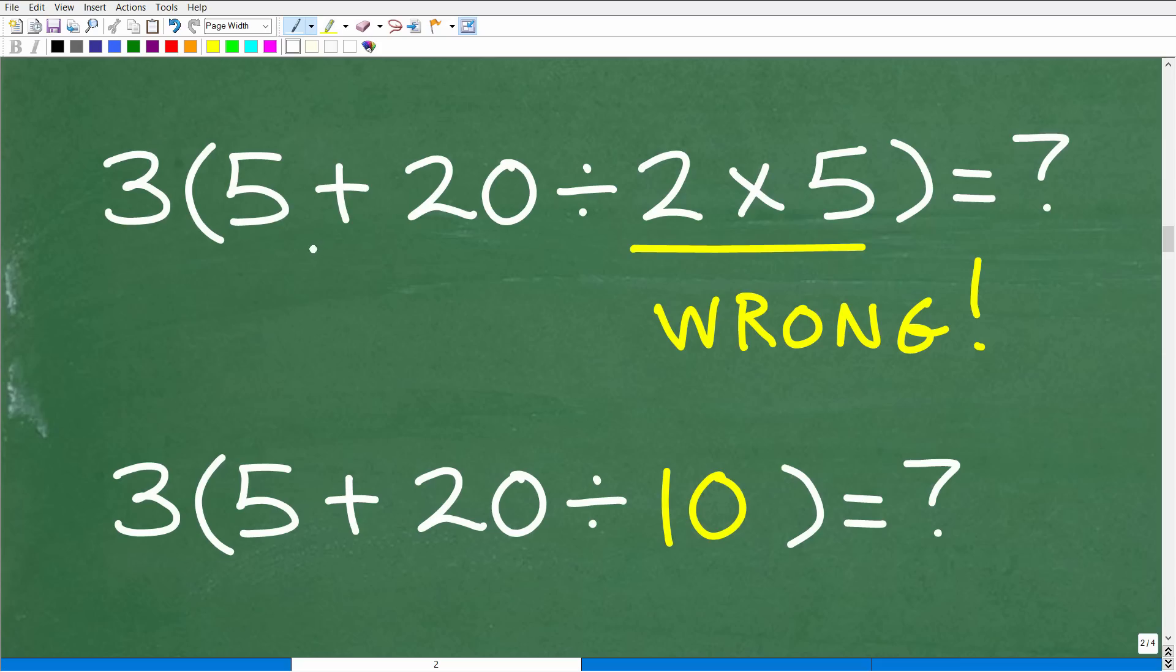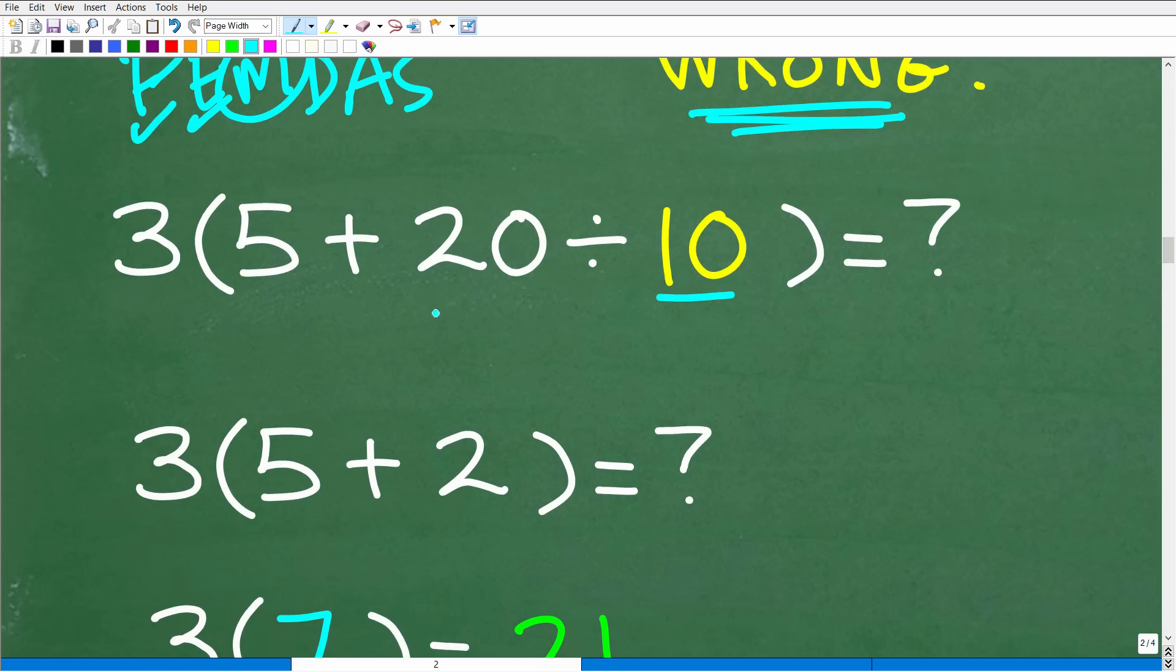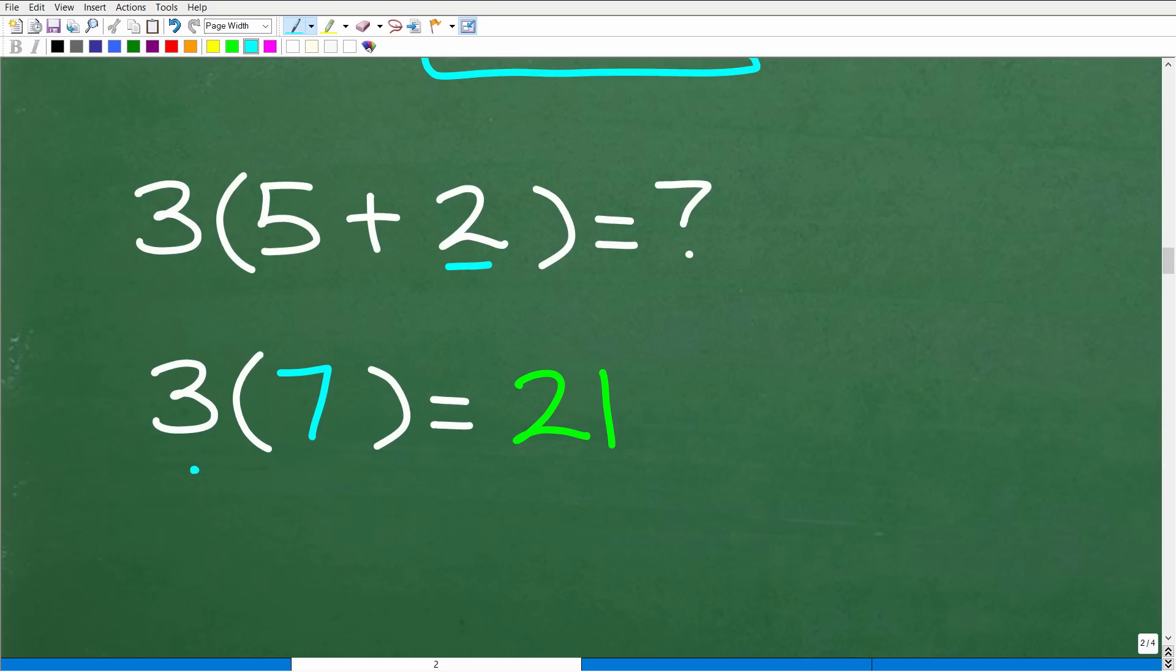Someone might think, 'I'll follow PEMDAS. I know PEMDAS.' They go to parentheses, work inside, there's no powers, so they do multiplication first - 2 times 5. Wrong! But let's play this out. 2 times 5 is 10, so we have 3(5 + 20 ÷ 10). Still working inside parentheses, we take 20 divided by 10, that's 2. Then 3 times (5 + 2), which is 3 times 7, which is 21.